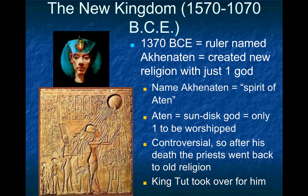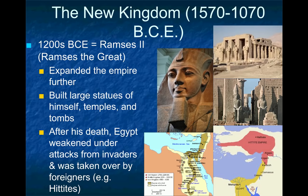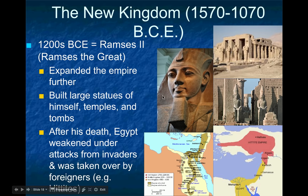King Tut was not a particularly significant pharaoh — he has more significance mainly because his tomb was so well preserved. The New Kingdom's most significant ruler was probably Ramses II, also called Ramses the Great. One of his most significant accomplishments was expanding the empire of Egypt even further, so that at the height of the New Kingdom it expanded basically into southern Europe. He also built major architectural achievements — large statues of himself like the Ramesseum, and pylons, which are major statues that stand outside of temples. He fathered more than 100 children and had many wives, symbolizing the height of the New Kingdom's power.